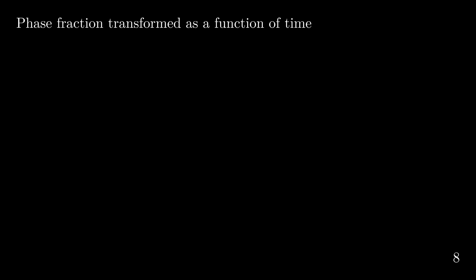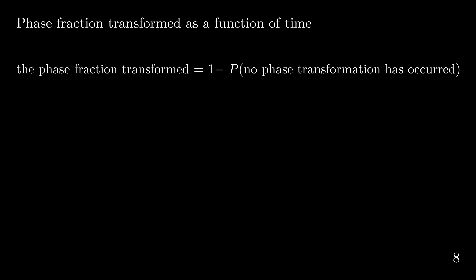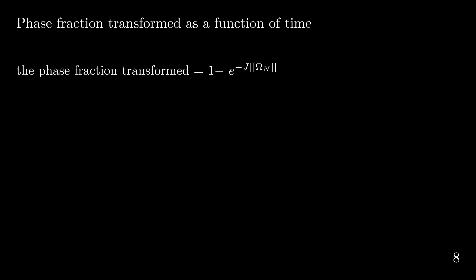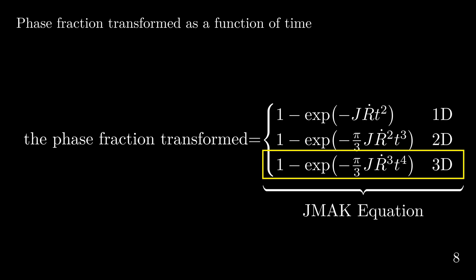Now we have all the information needed to complete the derivation of the JMAC equation. The phase fraction transformed equals 1 minus the phase fraction untransformed, and we express the probability of no phase transformation as e to the power of minus the nucleation rate times the nucleation volume. Plugging in the three equations derived with the time cone method: for 1D spacetime, the phase fraction transformed is 1 minus e to the power of minus j times r-dot times t squared; for 2D spacetime, it is 1 minus e to the power of minus pi over 3 times j times r-dot squared times t cubed; for 3D spacetime, it is 1 minus e to the power of minus pi over 3 times j times r-dot cubed times t to the power of 4. As promised, this last equation for 3D spacetime is the JMAC equation.